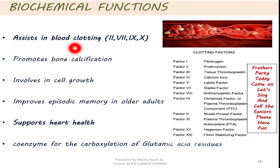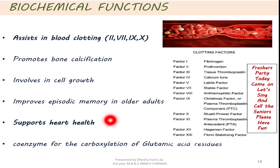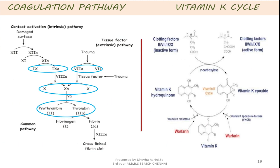In the blood clotting process, vitamin K brings about the post-translational modification of these clotting factors. It promotes bone calcification by improving bone density. It is involved in cell growth and it improves episodic memory in older adults. It supports heart health by lowering the blood pressure through preventing mineralization, so that it also lowers the risk of stroke. It acts as a coenzyme in the carboxylation of glutamic acid residues in proteins, and this reaction is catalyzed by the carboxylase present in microsomes.